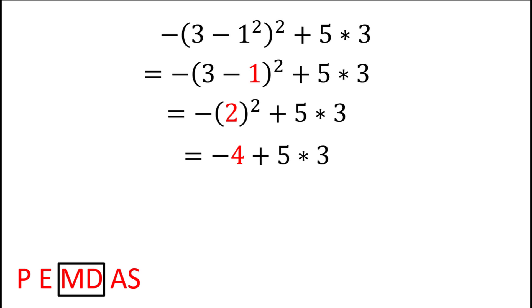Now we have multiplication and division, to which we have only multiplication in our problem. 5 times 3 is equal to 15. Finally, we have addition and subtraction. And we only have addition in our problem, which is negative 4 plus 15, which equals 11.